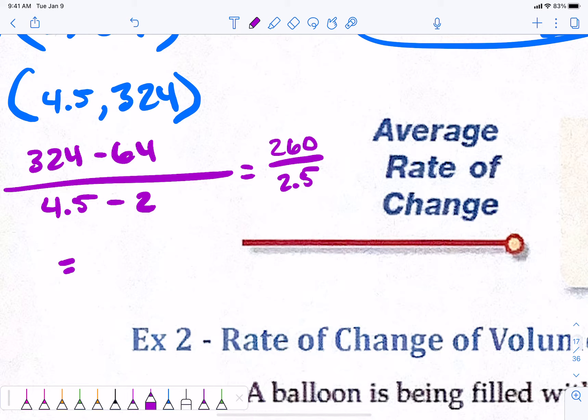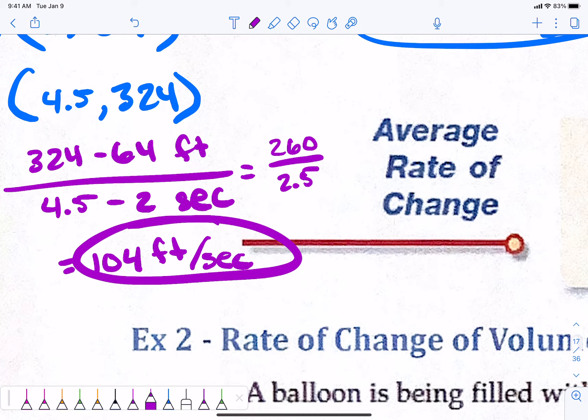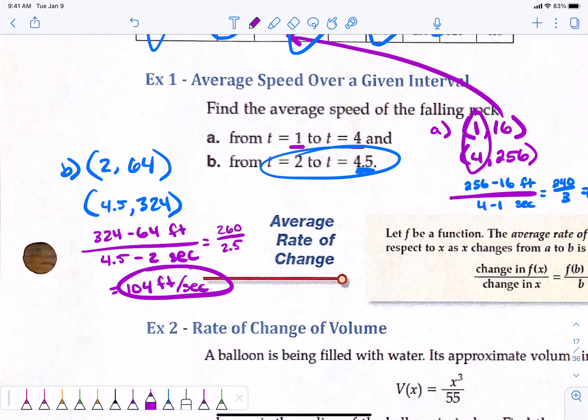260 divided by 2.5? 104. And we are still in feet per second. So, we are going faster as we predicted, because we've been falling longer at the 4.5 second mark.